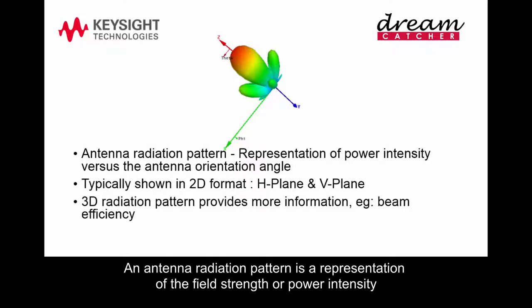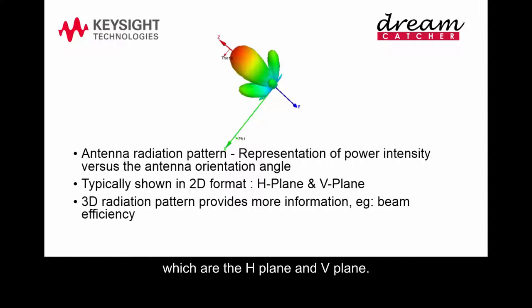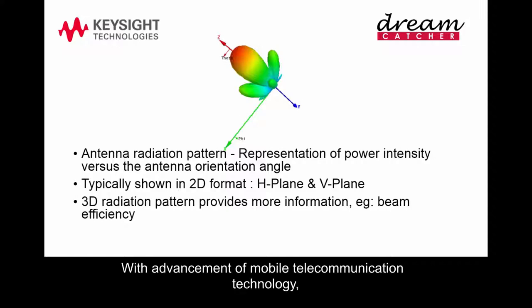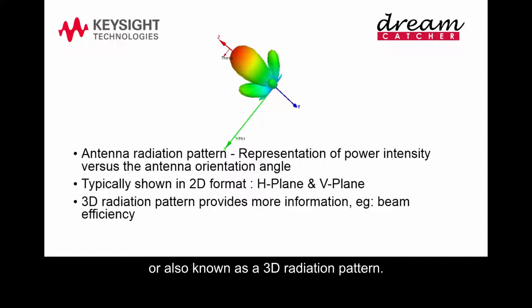An antenna radiation pattern is a representation of the field strength or power intensity versus the antenna orientation angle, and it is typically demonstrated in 2D formats, which are the H-plane and V-plane. With advancement of mobile telecommunication technology, it is crucial to measure the radiation pattern of an antenna in full spherical format, also known as a 3D radiation pattern.